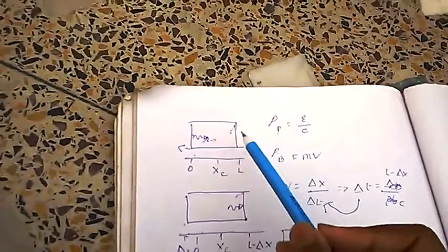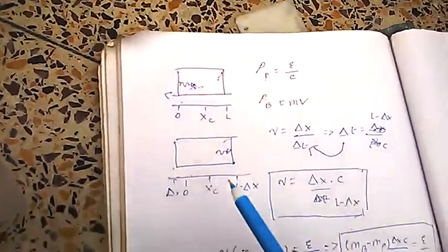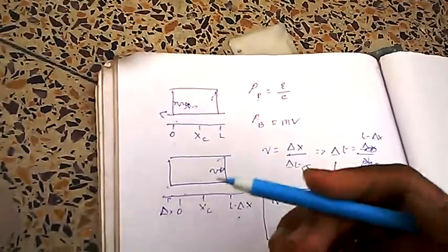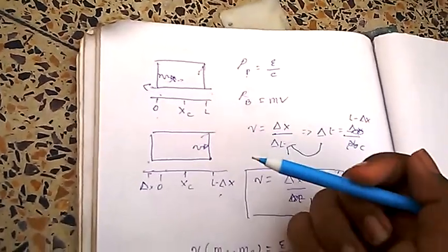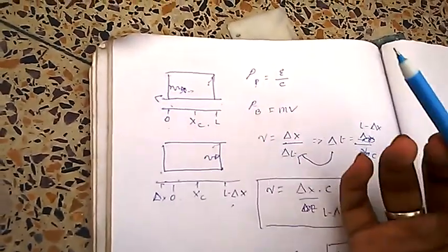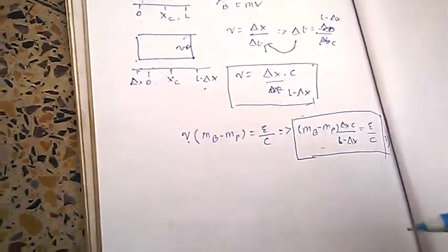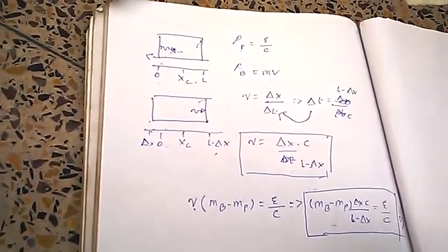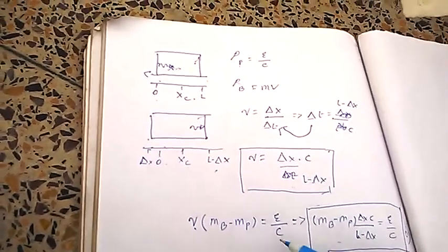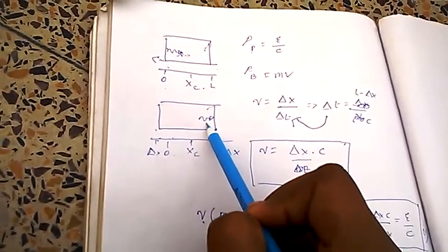Now, the box changed its position, but without any external force. So, the center of mass didn't move, but the box did. So, the mass displacement of the box has to be equal to the mass displacement of the photon.